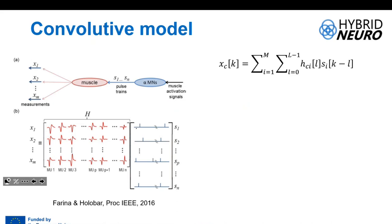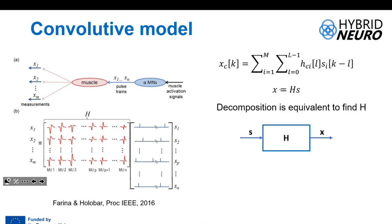Decomposing from a mathematical point of view basically means finding the matrix H. If you think of this equation as a system where the sources S are the input and X is the output, H is the mixing matrix that allows you to obtain X from S. So if you find H, you can invert this equation and find S from X.